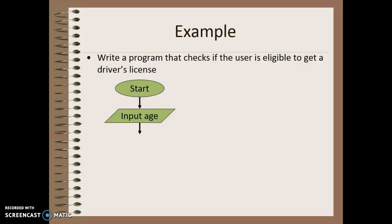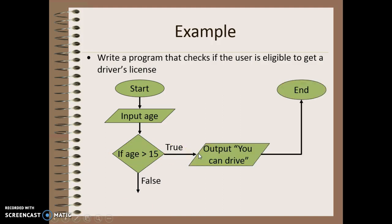So I would start, I would then input the user's age, and then I would compare. Is the age over 15? In other words, are they 16 or older? And if that's true, I'm going to follow this fork where I'm going to output that they can drive and then end my program.